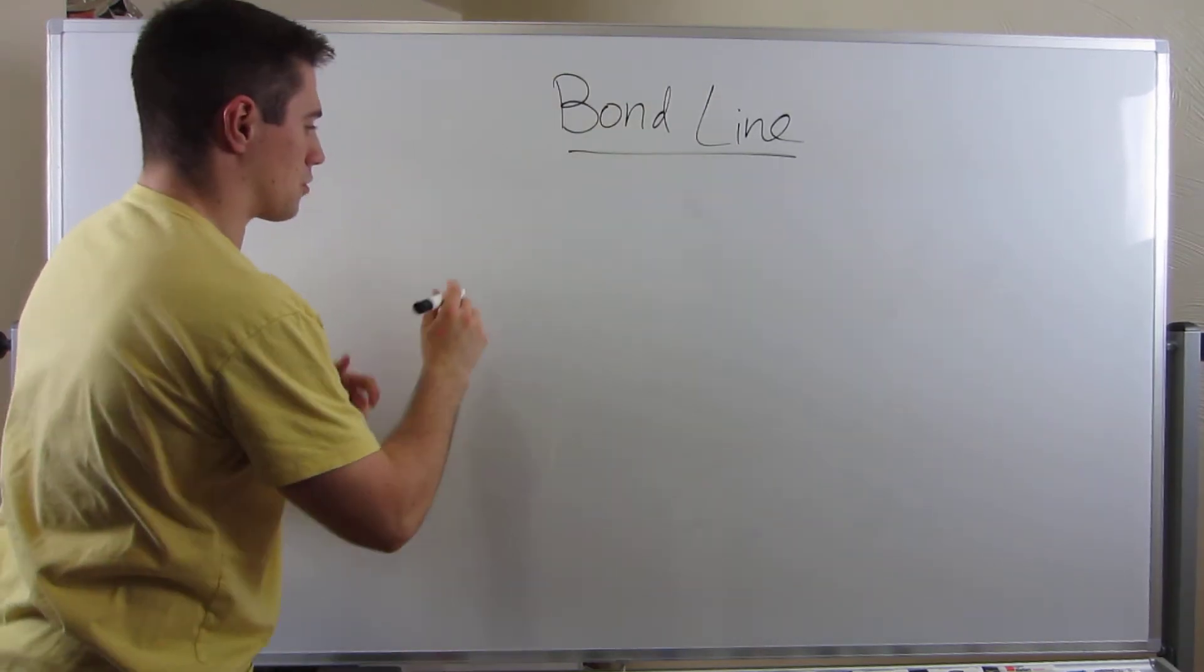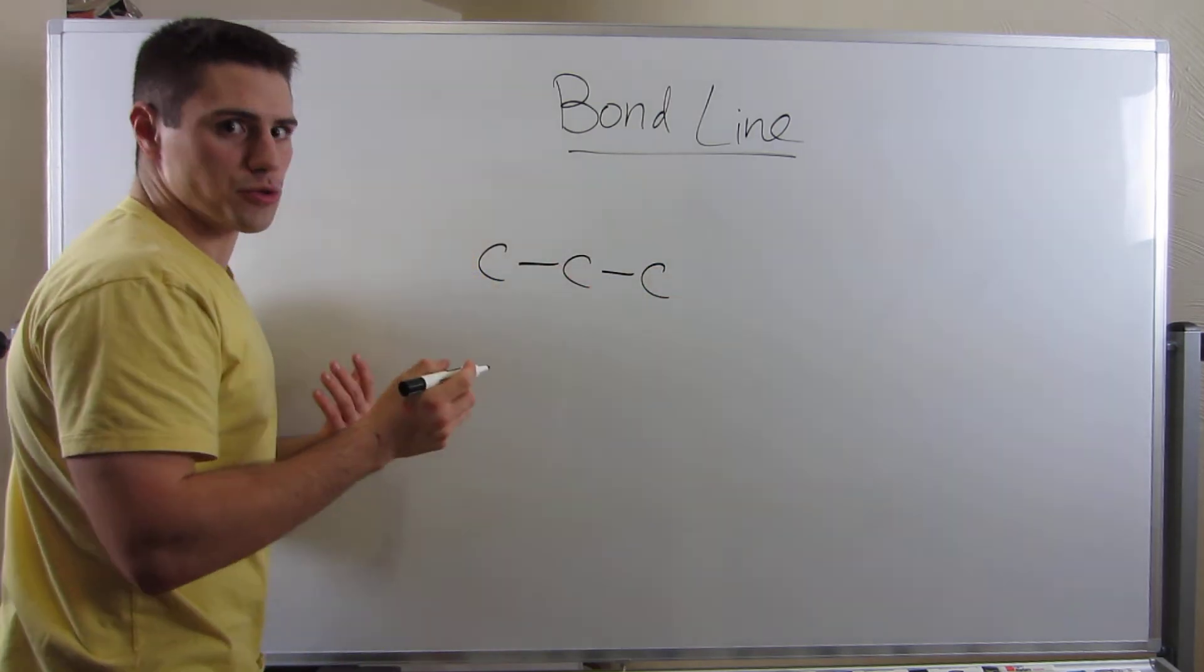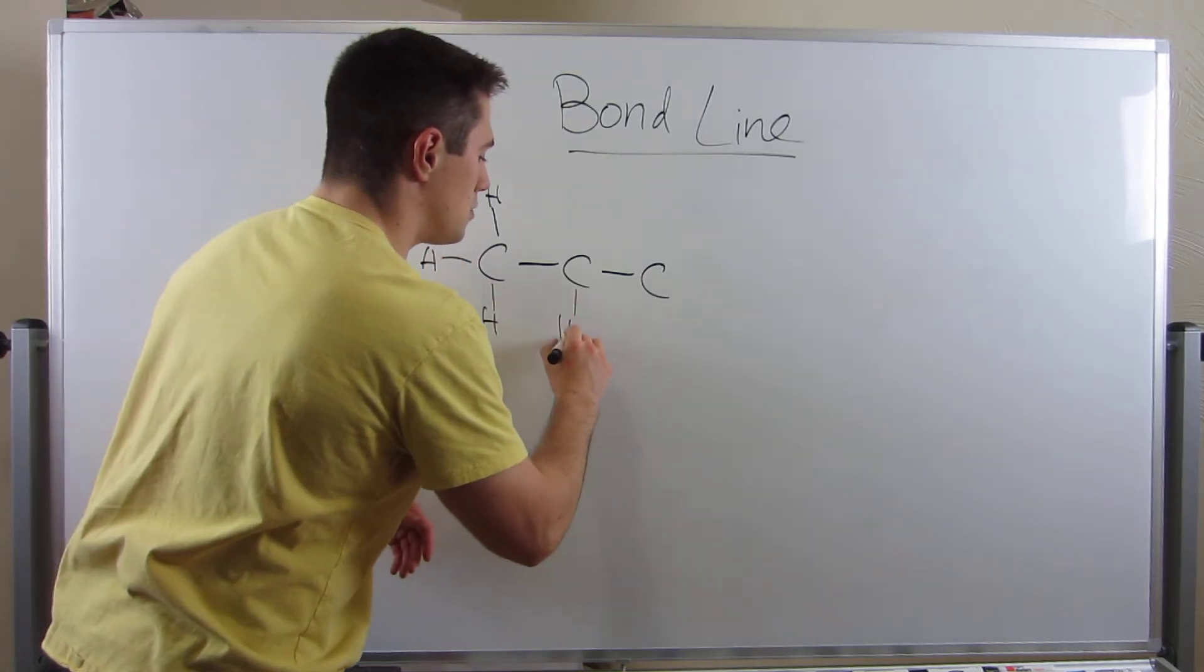Okay, let's do a shorter one. Let's do a three carbon chain. Propane, which I'm sure you've probably heard before. Right? So here would be the Lewis dot form.